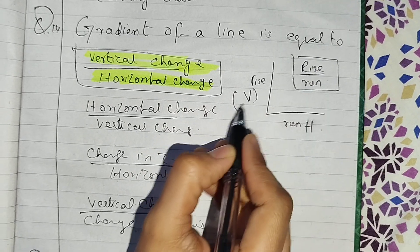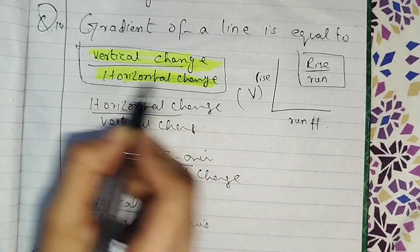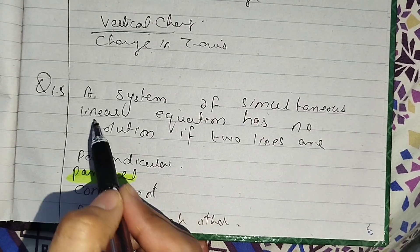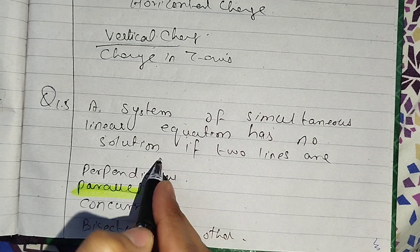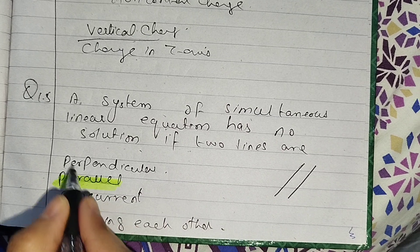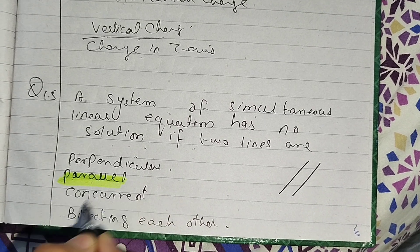Last blank: a system of simultaneous linear equations has no solution if two lines are parallel. They will be perpendicular, parallel, concurrent, or bisecting.